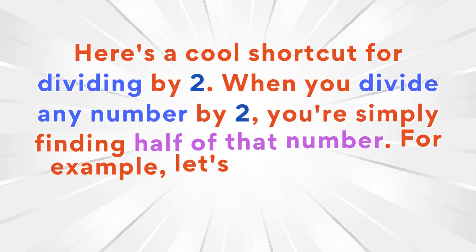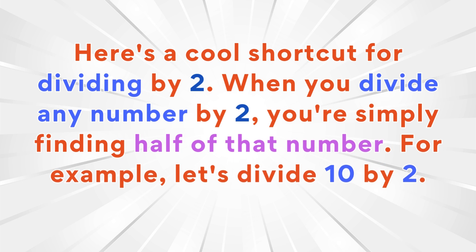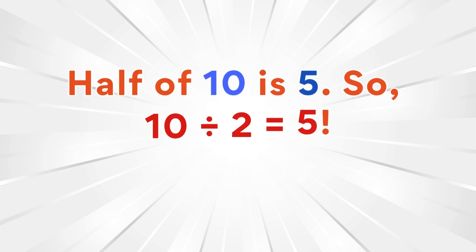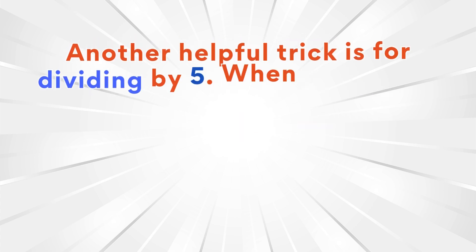Here's a cool shortcut for dividing by two: when you divide any number by two, you're simply finding half of that number. For example, let's divide ten by two. Half of ten is five, so ten divided by two equals five.